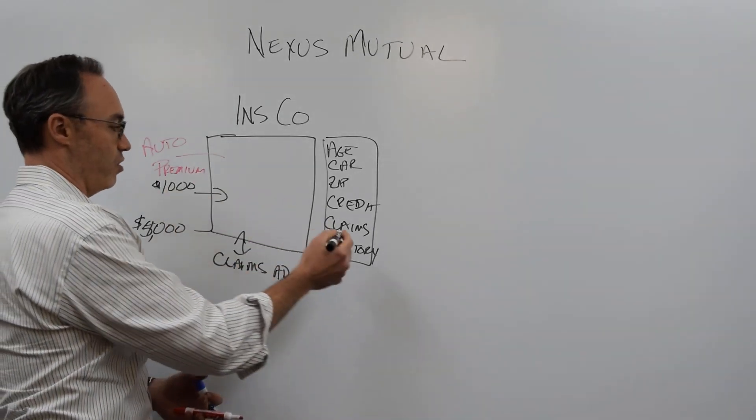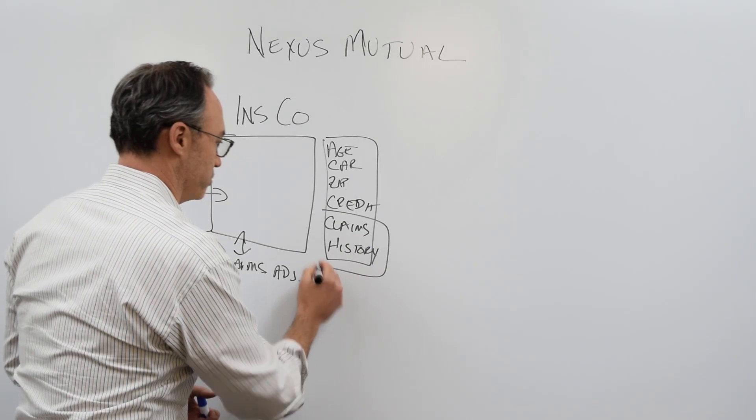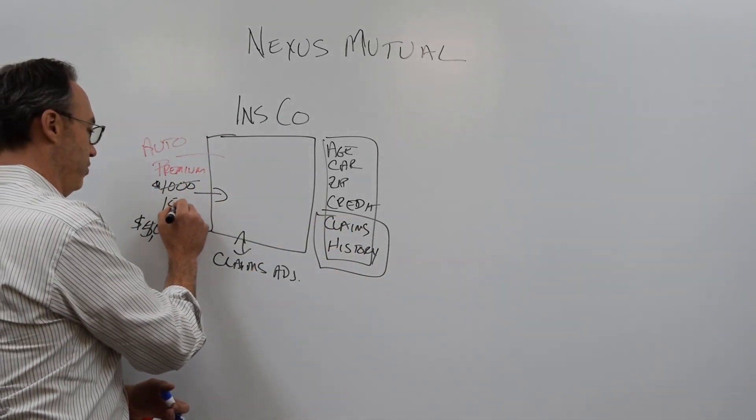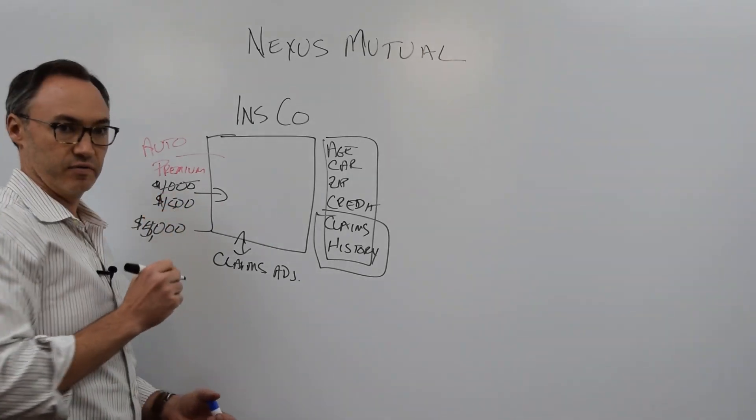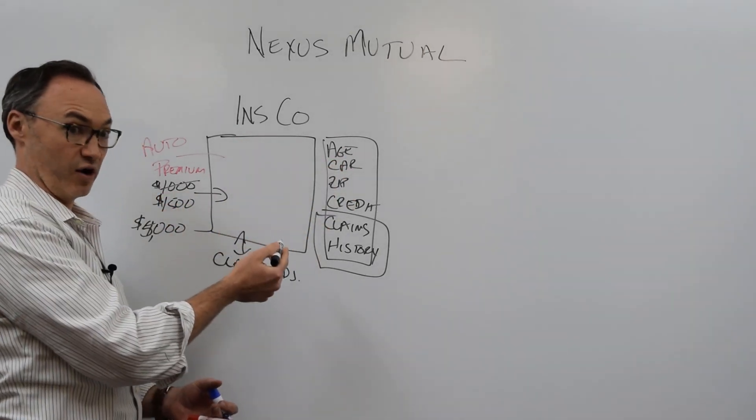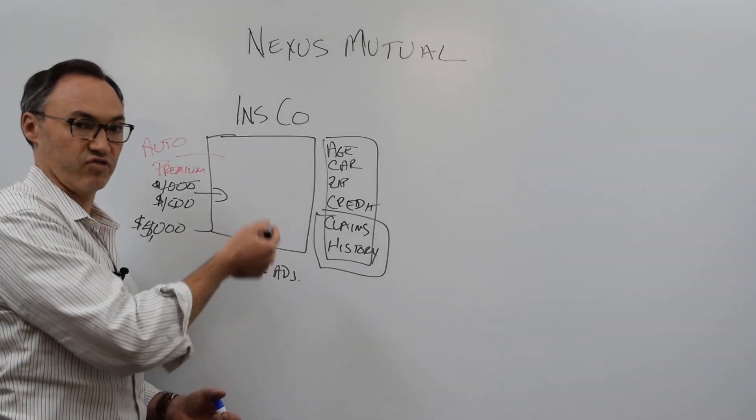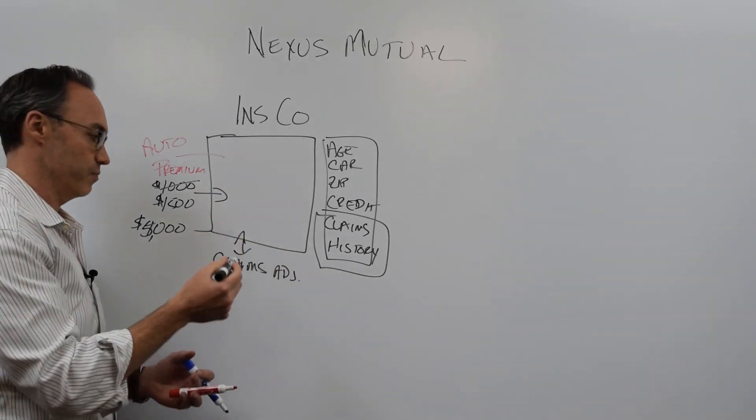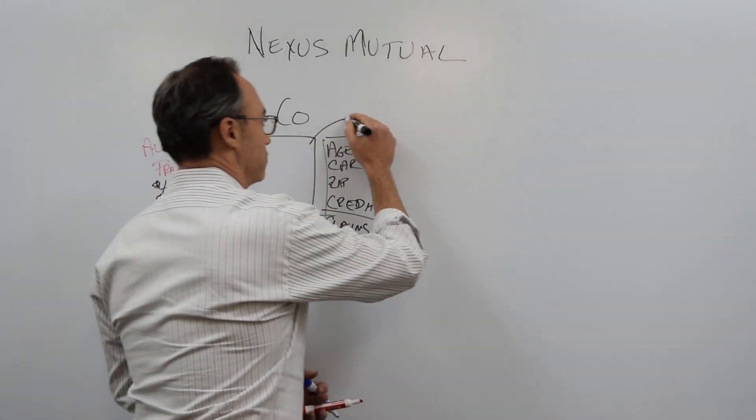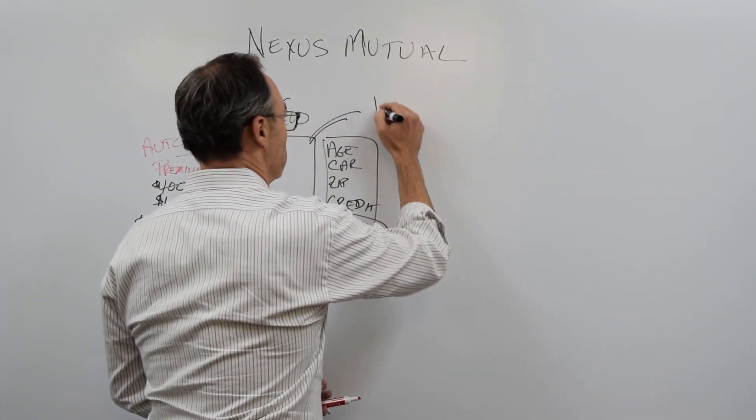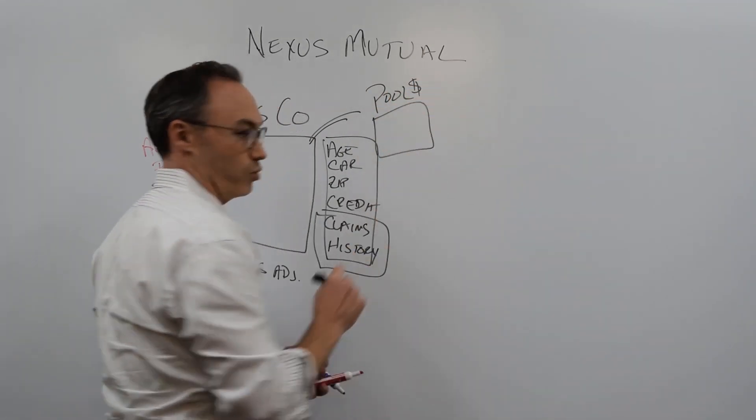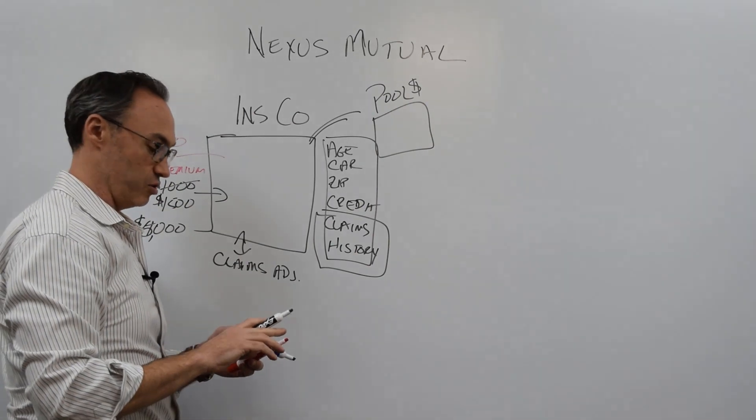And from now on, that history now goes against me. And from here on out, my premium might go up to $1,500, right? Because they can assess that about me, that apparently I'm a poor enough driver that now my premium has to go up because the risk that they have of me is higher.